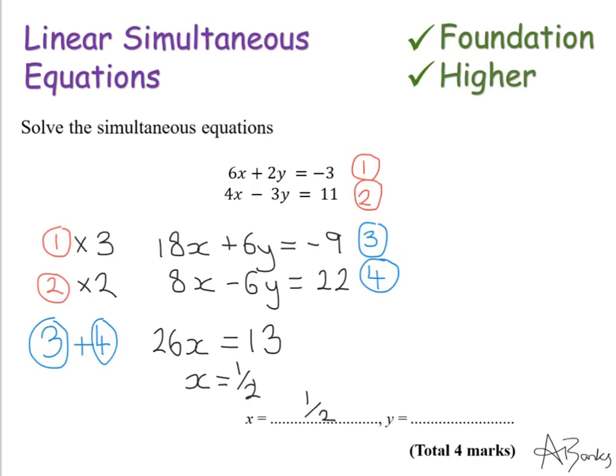So I'm going to tell the examiner what I'm doing here by writing substitute x is a half into equation 2. And let's see what happens. So I have 4x. Well 4 over half is 2. Minus 3y equals 11.